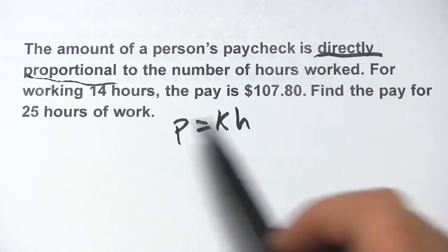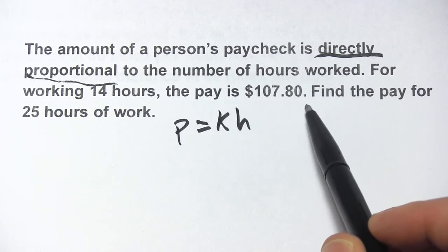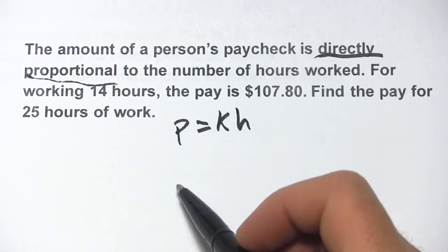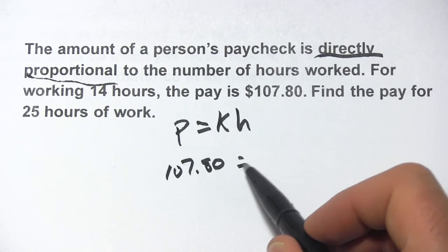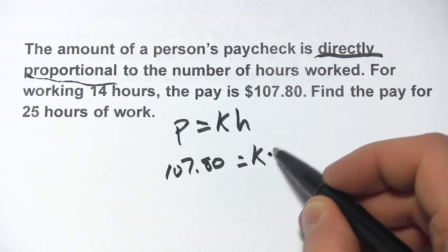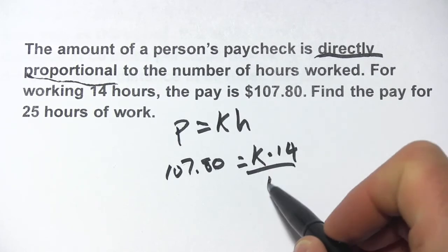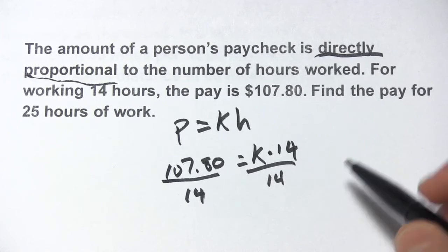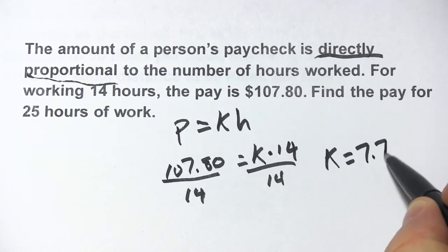It says for working 14 hours, the pay is $107.80. We can use those two numbers to figure out what our constant of variation is. So 107.80 equals the constant of variation times the 14 hours they worked. So if we divide both sides by 14, we find that k is 7.7.